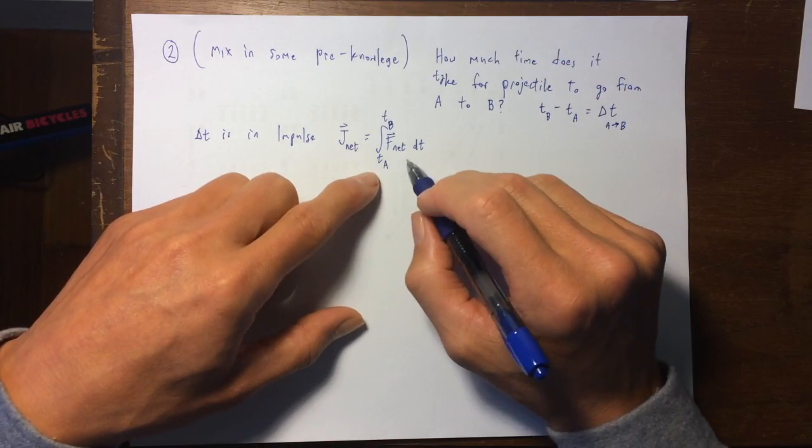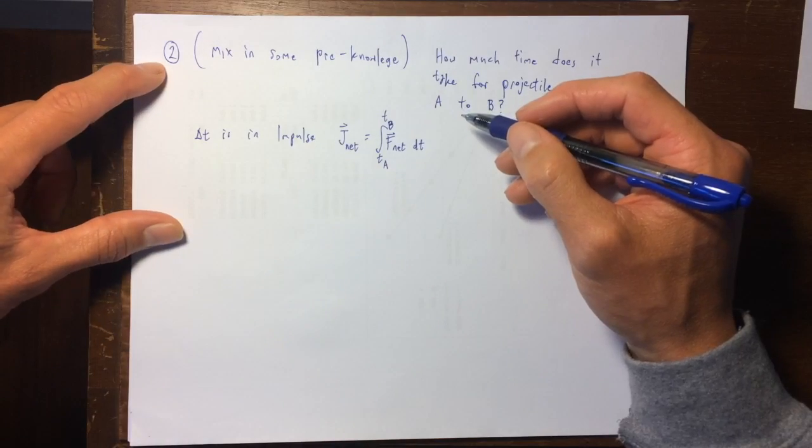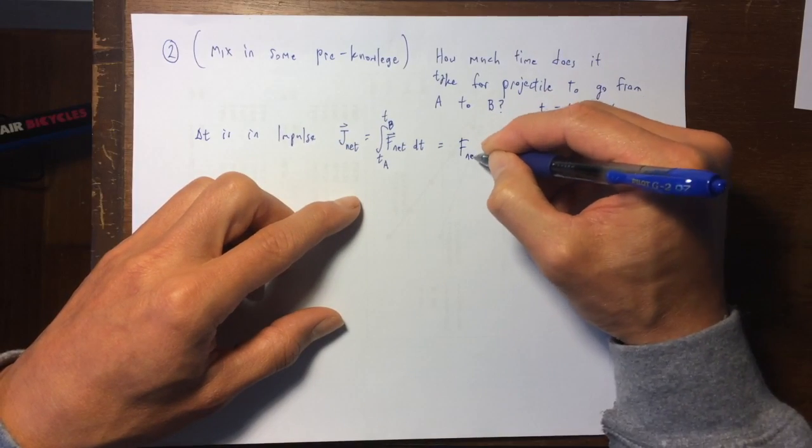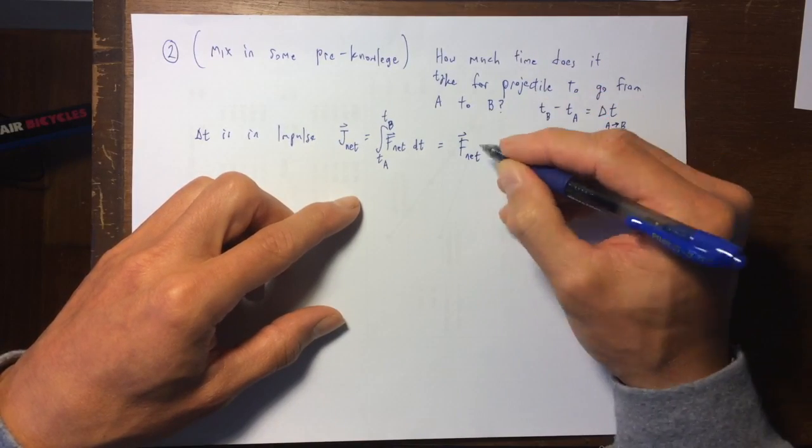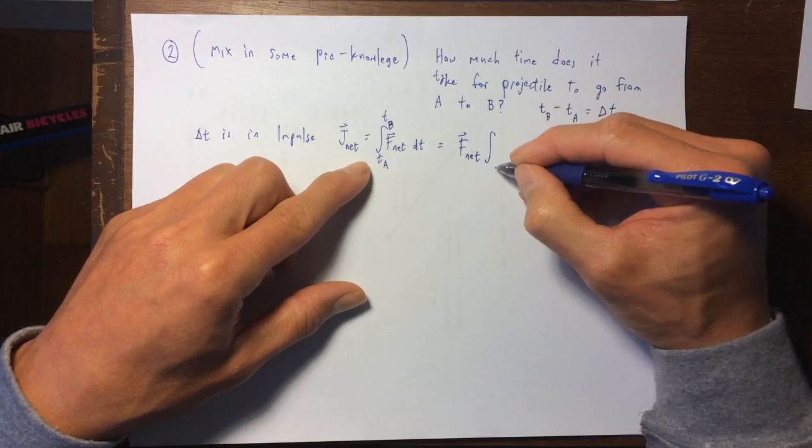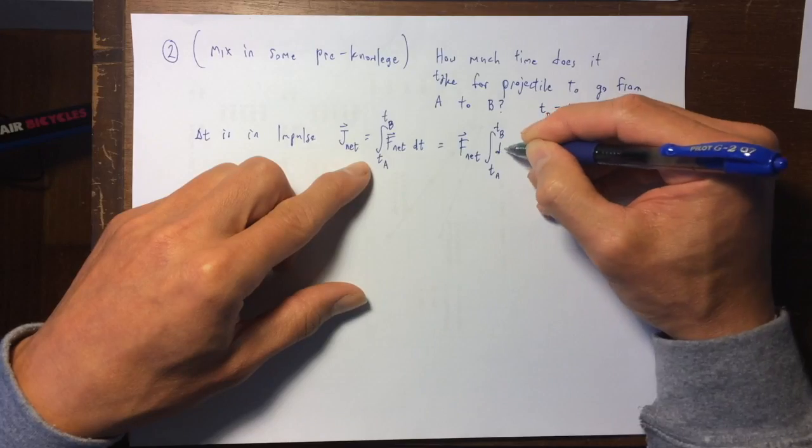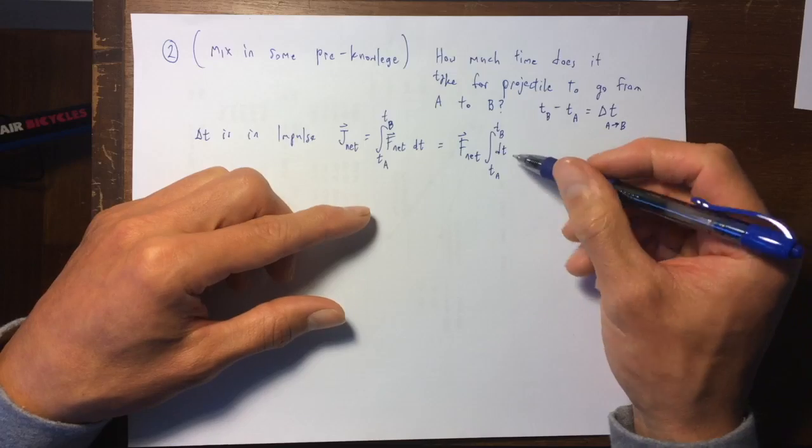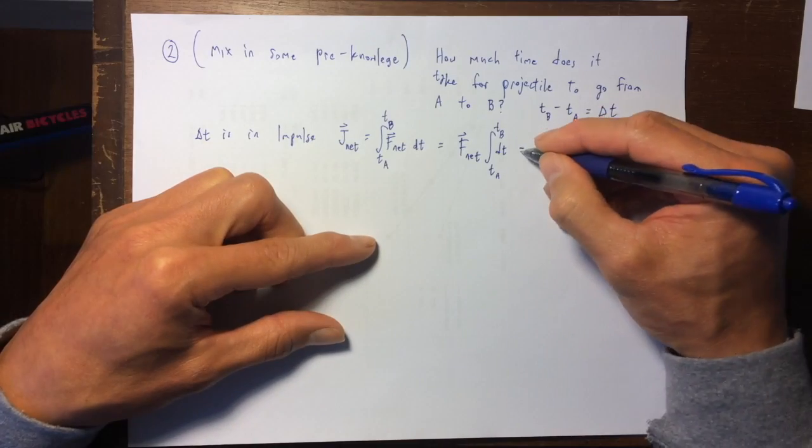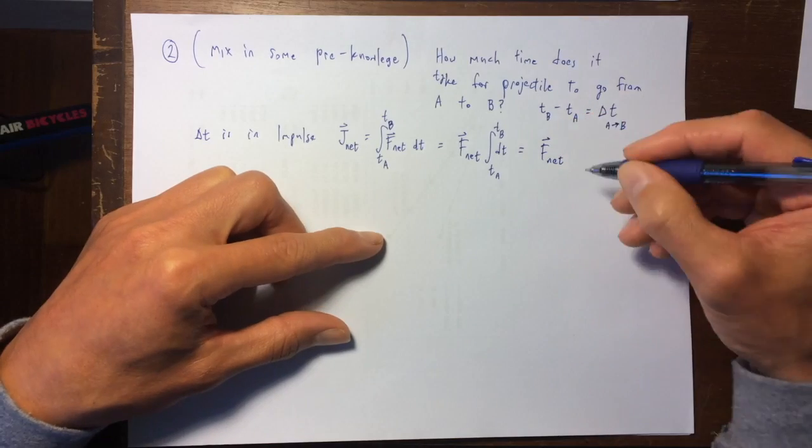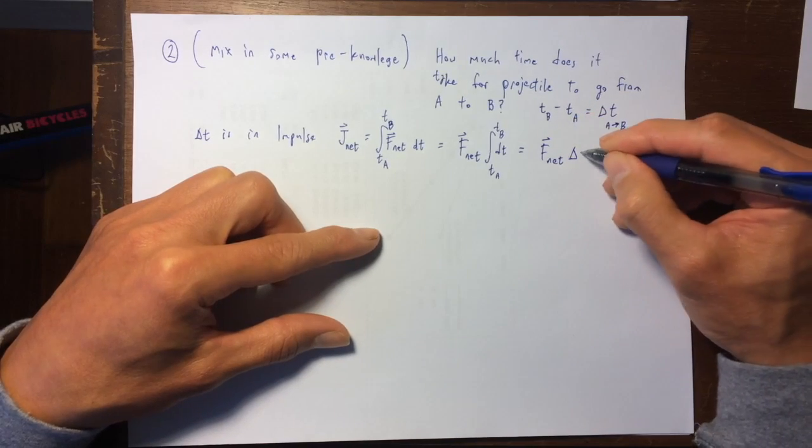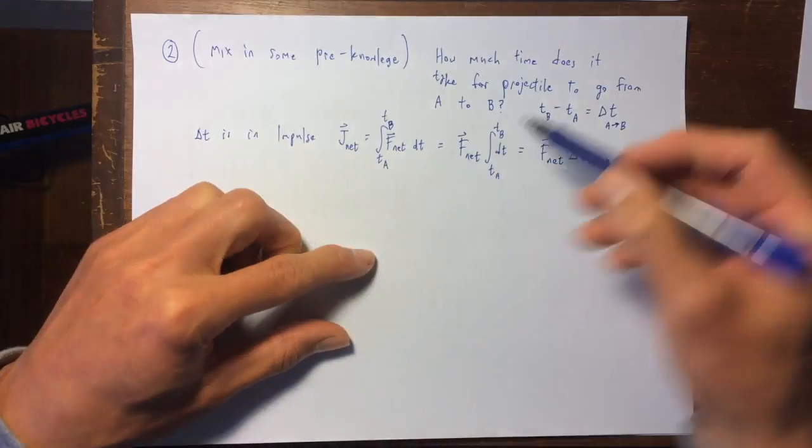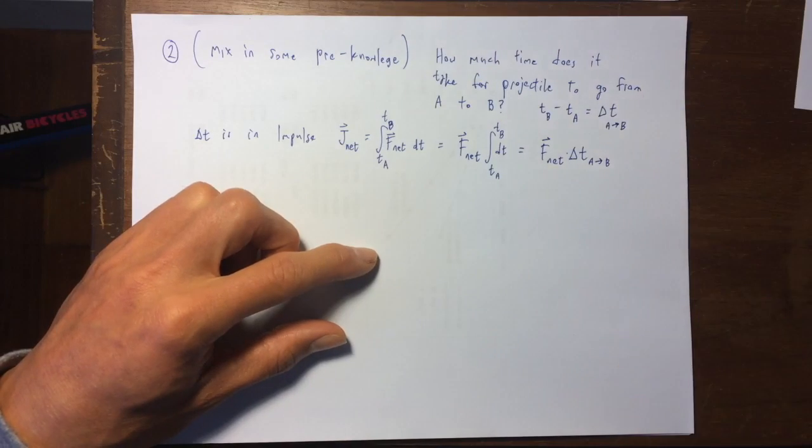And then also from the previous problem we just worked, problem number one, f net was a constant in time and came out of the integral, which was super helpful. This was the net force on the projectile and then there was the integral ta to tb. And all that's left over as the integrand is dt. So it just integrates to t, evaluated at tb and ta. So this is f net, and I'll just cut to the chase, it's multiplying this time difference, which is the answer.